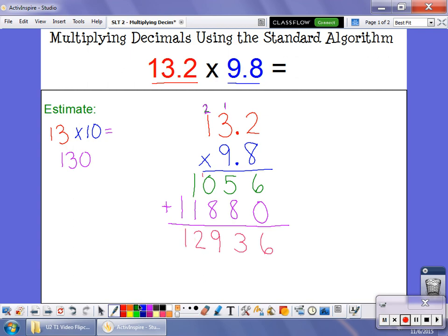So I've multiplied this whole number out, but I need to think about where my decimal goes now. Unlike addition and subtraction, it doesn't go right in line with the problem. This is where our estimate can help us. I know I need an answer that's close to 130. So what I want to think about is where can I put my decimal point?